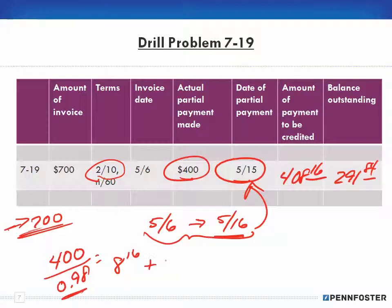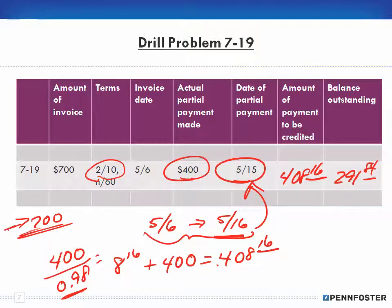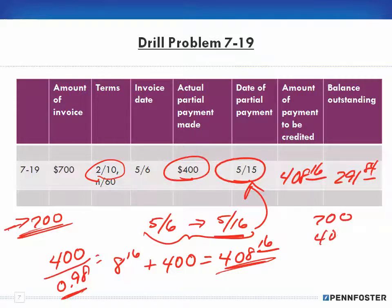I add the $8.16 to the $400 and end up being credited $408.16. That makes a lot more sense — I pay $400 and receive the 2% discount credit, which is based on what I'm actually paying at this moment. Then I subtract $408.16 from $700, leaving a balance due of $291.84.